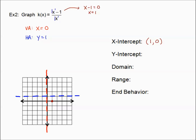Next, the y-intercept — setting x equal to zero. In the numerator we get zero minus one, and in the denominator we get zero. That's negative one divided by zero. We can't divide by zero, so there is no y-intercept. That makes sense because the vertical asymptote covers up the entire y-axis.